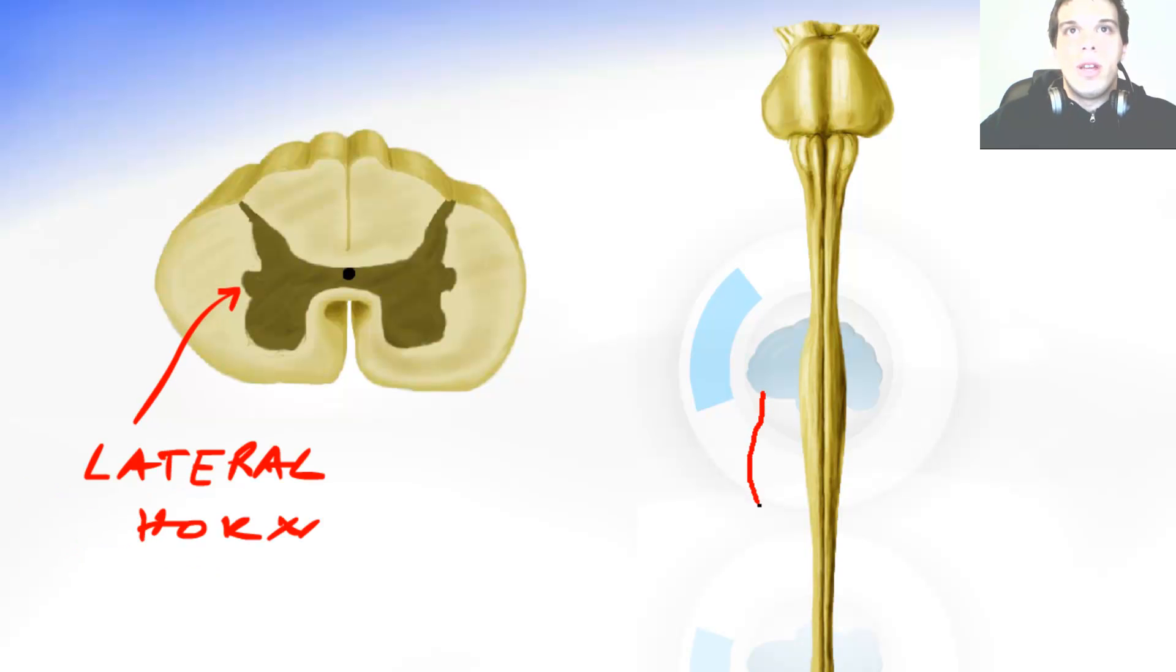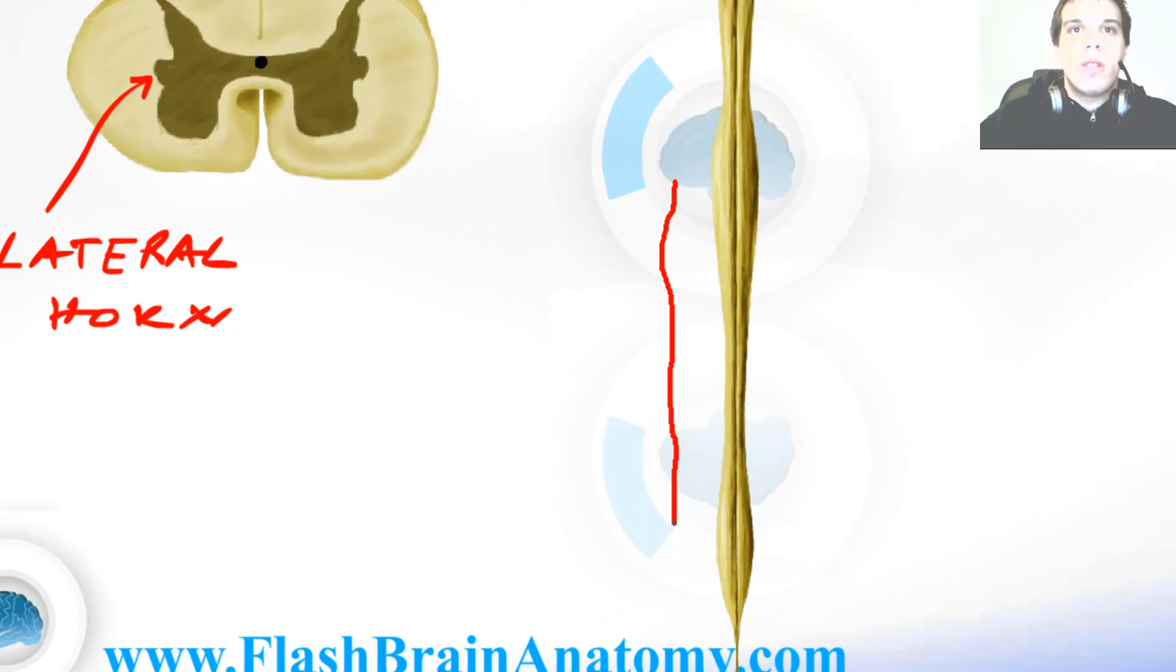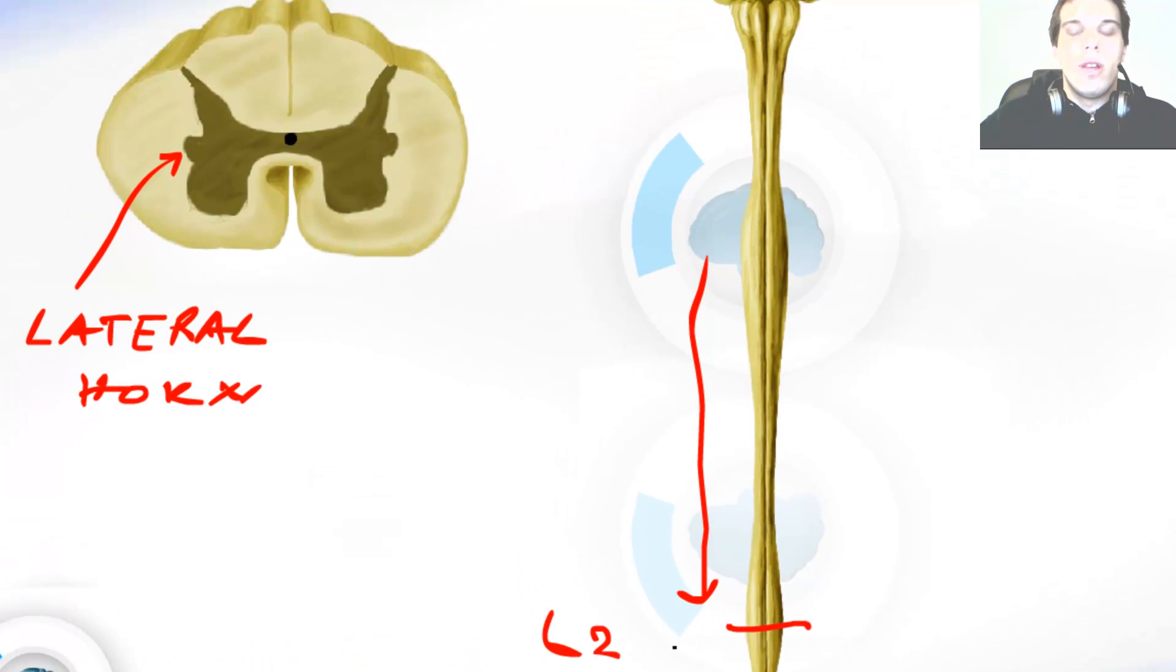This lateral horn can be found in all segments all the way till the first two lumbar segments over here. And then further it cannot be found anymore. You cannot see the lateral horn. So L2 is the place where the lateral horn ends.